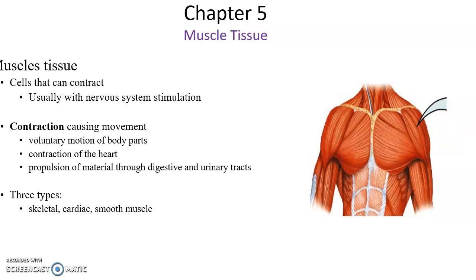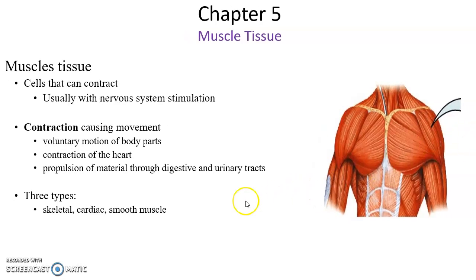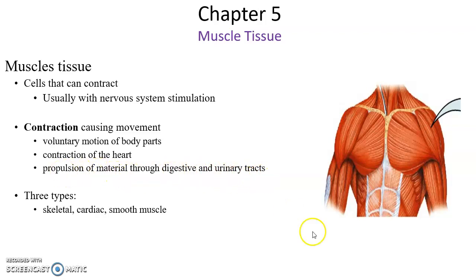We are moving on to muscle tissue. Muscle tissue are cells that can contract — they get shorter. When they get shorter, they generate a force that allows for movement to occur. Usually these cells are stimulated by the nervous system, giving the commands for them to contract. They cause movement — moving actual body parts, arms and legs. Things like contractions of the heart can cause constriction within tube-like structures in the digestive system and urinary tract to move materials along.